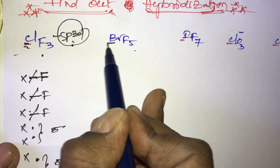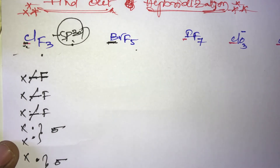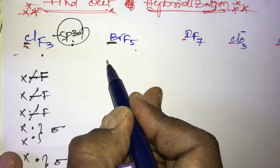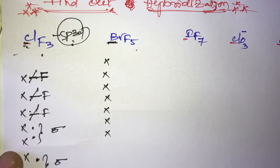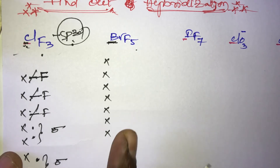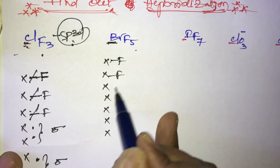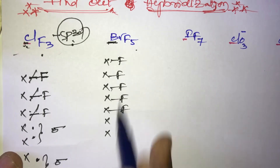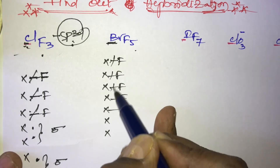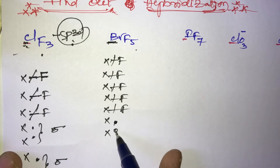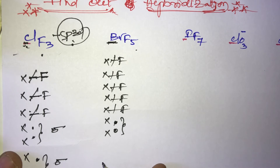Next, in BrF₅, what is the hybridization of bromine? Bromine belongs to the 17th group (7th group) elements, so it can maximum bond seven. Here five fluorines are present, each occupying a single bond, giving five single bonds — that means five sigma bonds.